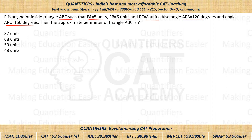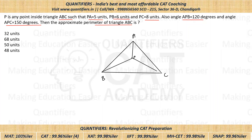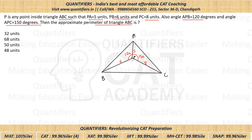Let's say we have triangle ABC and P is a point inside it. We know PA = 5, PB = 6, PC = 8. Angle APB = 120° and angle APC = 150°. Since a complete circle is 360°, the remaining angle BPC = 360° − 120° − 150° = 90°.